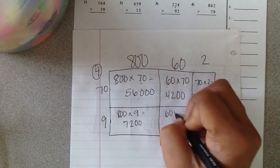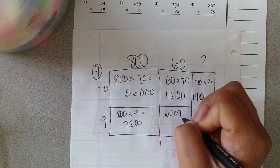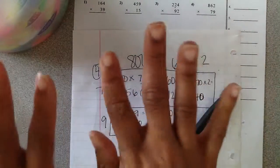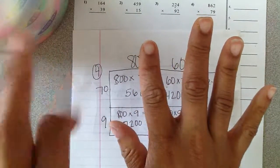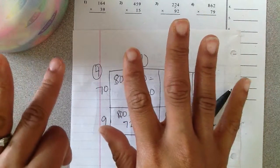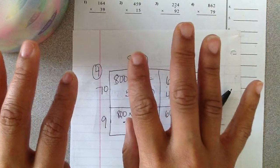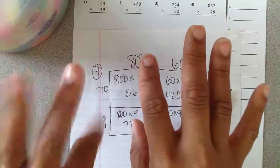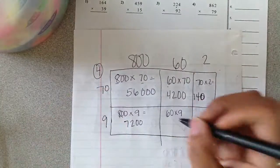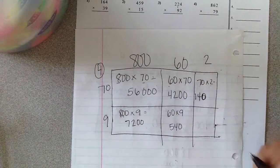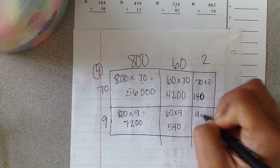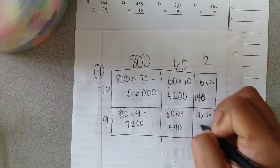Then here I have sixty times nine. Again I could use that nine trick. Nine times six. If I put up my fingers and counted to my sixth finger, put down my seventh one. I have ten, twenty, thirty, forty, fifty. Fifty-one, fifty-two, fifty-three, fifty-four. So nine times six is fifty-four and I add one more zero. And then nine times two is eighteen.